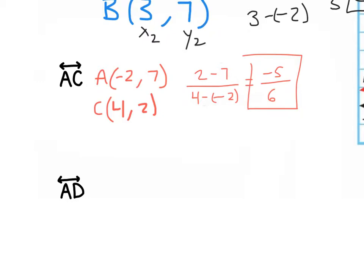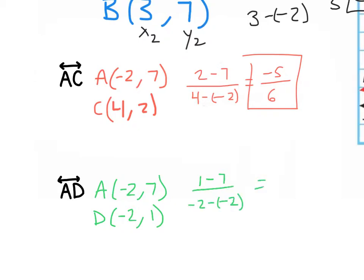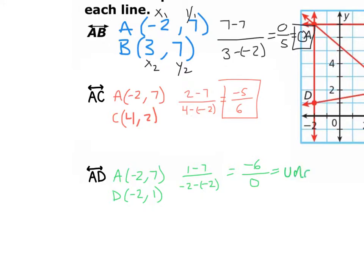Now let's look at AD. A is negative 2, 7. Point D is negative 2, 1. So we have 1 minus 7 over negative 2 minus negative 2. On the top we get negative 6, and on the bottom we get 0. What happens when we have 0 on the bottom? It's undefined. So the slope for AD is undefined.